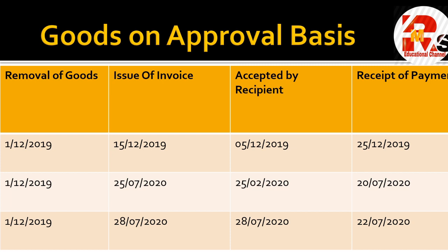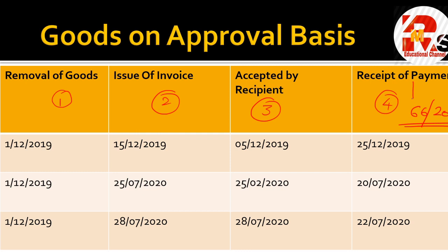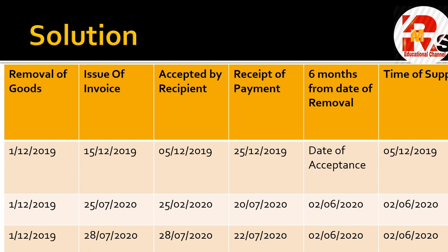Ab hum practical part solve karenge. Goods on approval basis ke liye yahan question liya hai. Column 1 is removal of goods, Column 2 is issue of invoice, Column 3 is accepted by the recipient, and Column 4 is receipt of payment. Pehle rule mein hum saare columns ko compare karte the - whichever is earlier. Lekin as per Notification 66 of 2017, receipt of payment should be ignored - yeh immaterial ho gaya hai. In approval basis cases, we also need a column for 6 months from the date of removal.